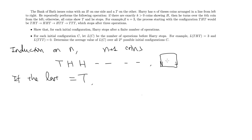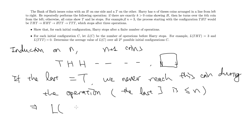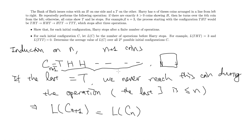So the easy case is when the last coin is a tail. Then we can easily remove it, because we never meet this coin during the entire operation. The reason is that the last change of direction is a right bracket, which needs to be a head. And after that, we go all the way down to zero. So we never get the chance to go beyond the last head, and hence never operate on this last coin. This means that we can simply remove it, and the number of operations remains the same. More precisely, if I denote cn+1 the entire sequence, the number of operations L(cn+1) equals to the number of operations L(cn), where cn is the first n coins.